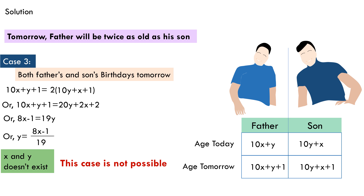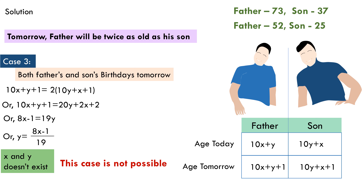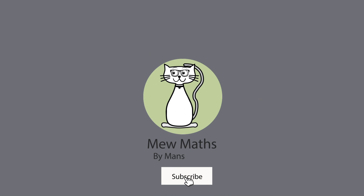Cases 1 and 2 gave us two possible solutions to the problem. The father and son can either be 73 and 37 today respectively, or 52 and 25 today respectively. Hope you liked the video — feel free to comment with suggestions, opinions, and your experience with the question. Don't forget to like and subscribe to the channel, as your involvement helps the channel do better.